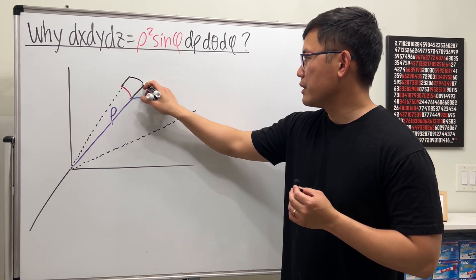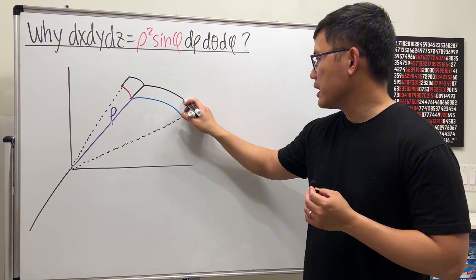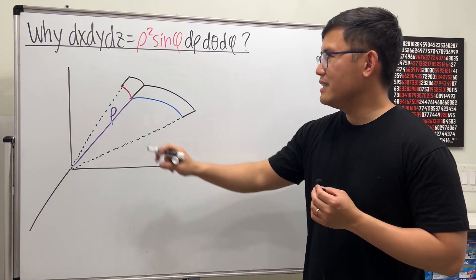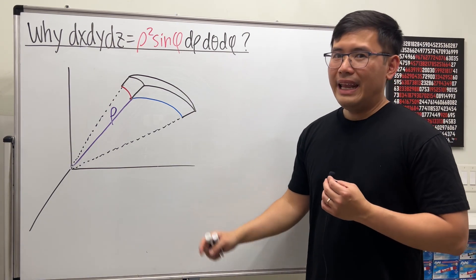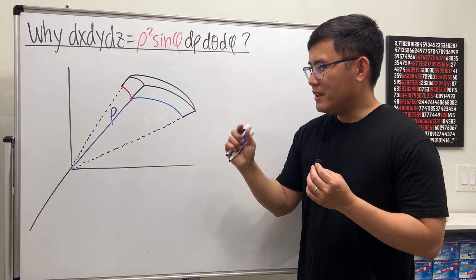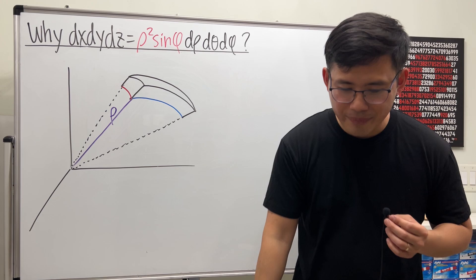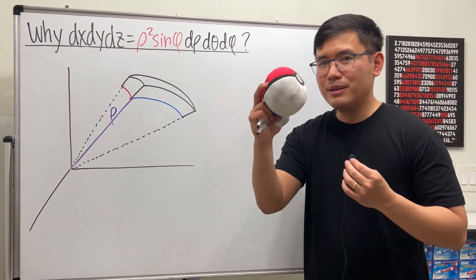Finally, connect the dots but with curves though. This right here should be like a small chunk of a sphere, just like a small part of a pokeball like this. I know you haven't seen this for a while, but it's always here.